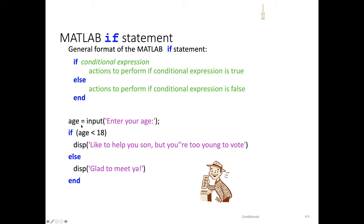Another approach: consider displaying a specific message based on a user's age. If we're given a user's age and evaluate the condition — if age is less than 18, then we display 'you're too young to vote.' With an else, meaning the age entered is 18 or greater, we display 'glad to meet you,' which indicates the user is able to vote. The else clause is optional, and you can use just the if statement alone.